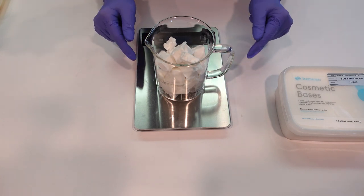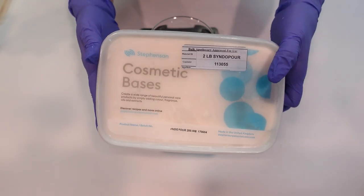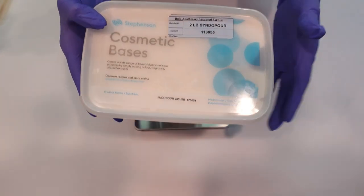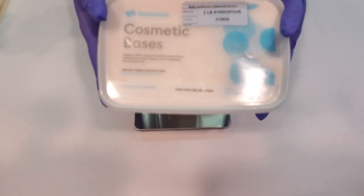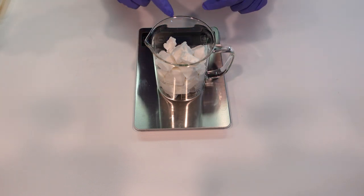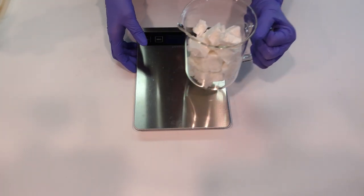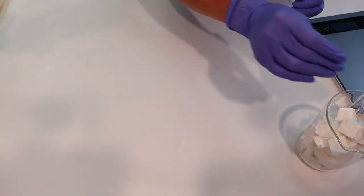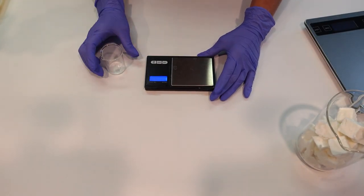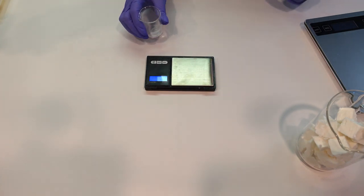A couple little things about this base - it is a cosmetic base that comes from Stephenson Personal Care and it's called Syndet Pour. That's the base I'm using. You can use it for both shampoo and also syndet facial and body bars. It is soft when you cut it but it hardens up after you melt it and repour it. We're going to set this aside. I want to get some of my other ingredients ready to go before we melt this down because I want everything to be ready to pour in shortly after we melt it down.